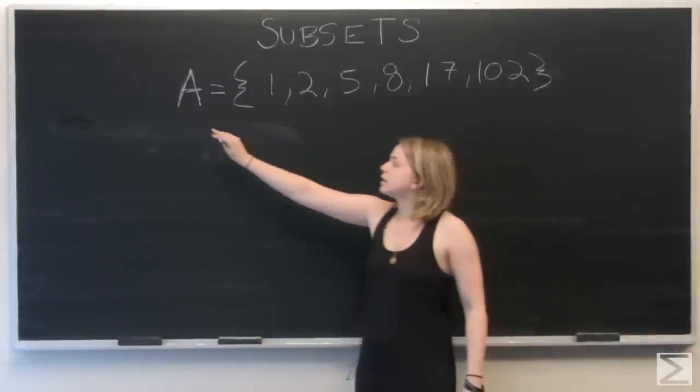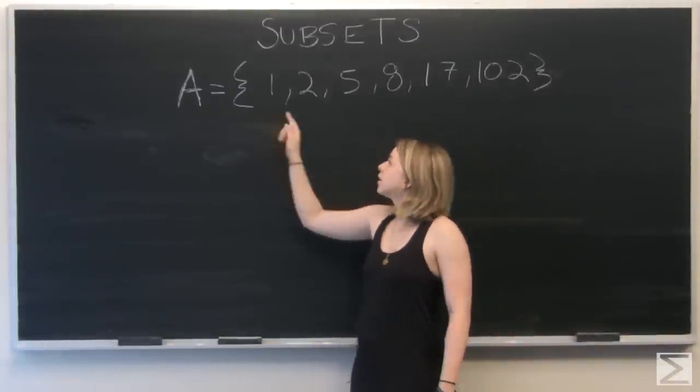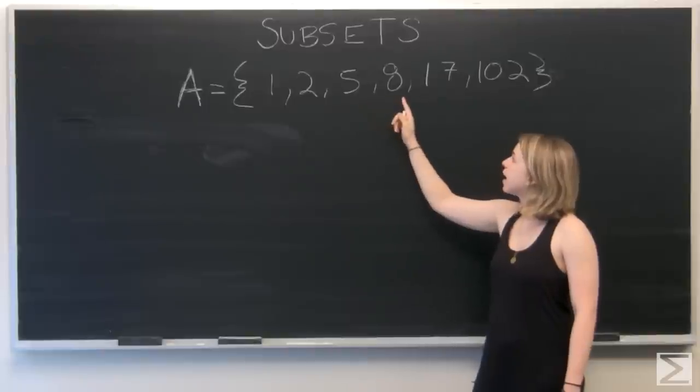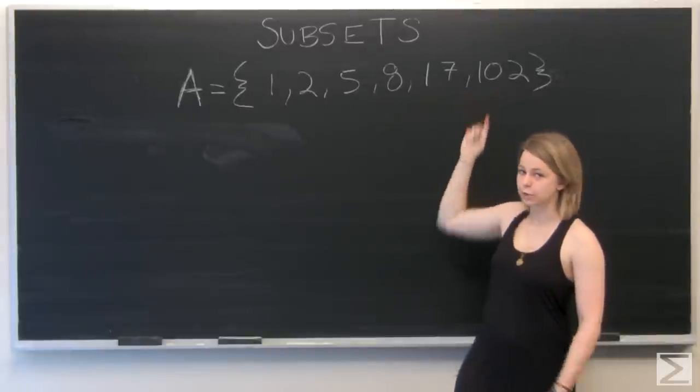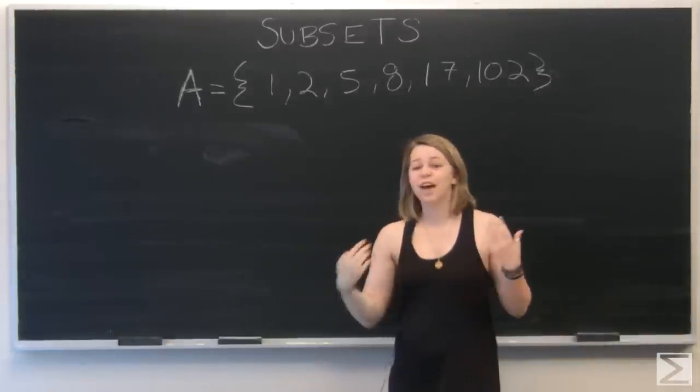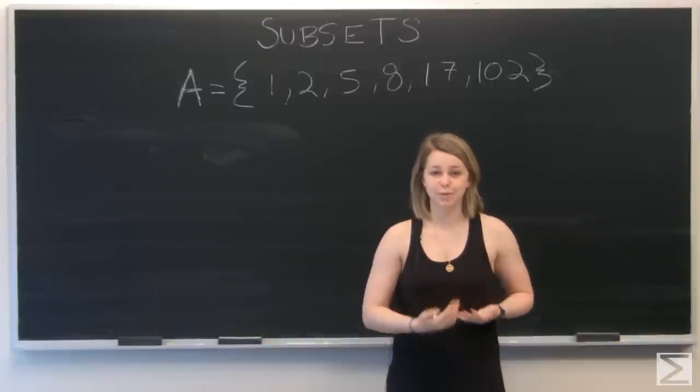What I have behind me is a defined set A with elements 1, 2, 5, 8, 17, and 102. These don't have any real relationship with each other; they're just numbers that I picked.